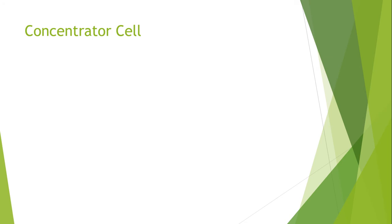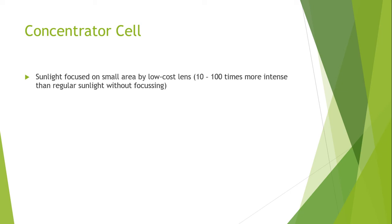In concentration cells, sunlight is focused on a small area by a low cost lens that is 10 to 100 times more intense than regular sunlight without focusing. Area requirement for a required energy capacity is significantly reduced, leading to significant reduction in the material that is used in the construction of photovoltaic cells.